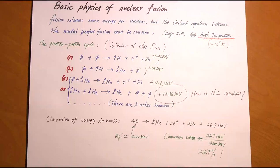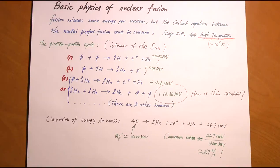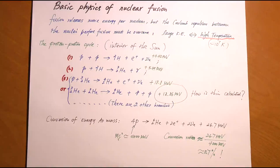Fusion has a very basic difference from fission. In order to fuse lighter nuclei together, you first have to overcome their Coulomb repulsion. Every nucleus is positively charged because of the protons, and when you get them very close together they start to repel each other by Coulomb repulsion. Unless you get them close enough so that the strong nuclear force can take over, Coulomb force remains the only significant force and they repel each other.